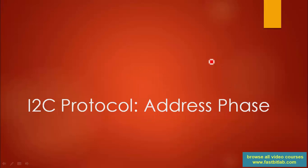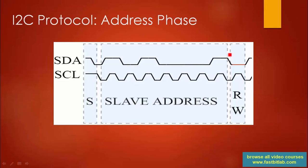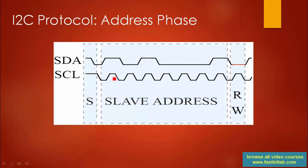Welcome back to the lecture. In this lecture let's look at the address phase, which we have already discussed in the previous video, but let's take a close look at the waveform. Once the master produces the start condition, the address phase follows. The address phase is a collection of eight bits — here you can see the first clock cycle after the start condition, then the second, third, fourth, fifth, sixth, and seventh.